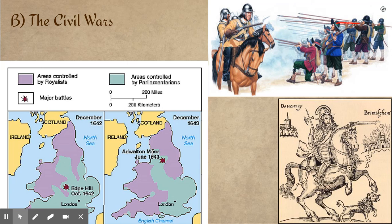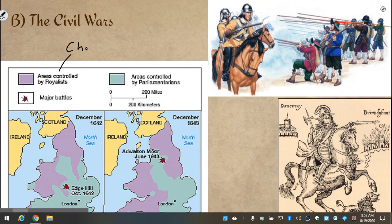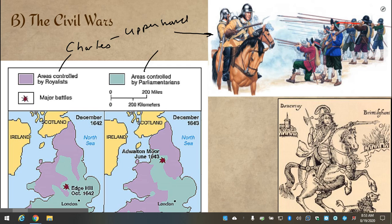This is a really interesting period in history. The Civil Wars were between the Royalists — Charles' forces — and the Parliamentarians — Parliament's forces. They fought a series of battles all over England. In the beginning, it seemed like Charles had the upper hand because he had better trained troops, and so in the early years, Charles was winning, or at least seemed like he might win the English Civil Wars.